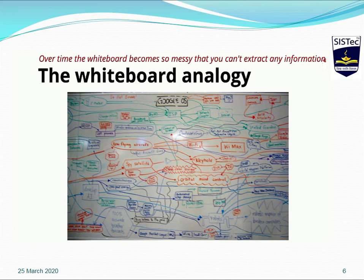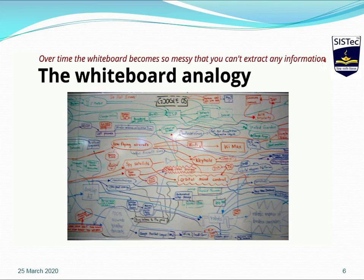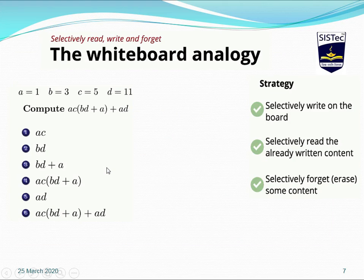To understand how to deal with these problems, consider a whiteboard analogy. Suppose you have a whiteboard with the constraint that you cannot erase what you write. Initially the whiteboard is empty and information is easily readable, but over time it becomes too messy and unreadable. We cannot extract useful information from it anymore. The same situation occurs in RNN because the input is morphed again and again by multiple layers, making it very difficult to extract useful information.